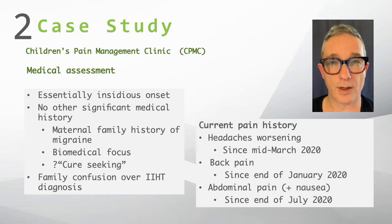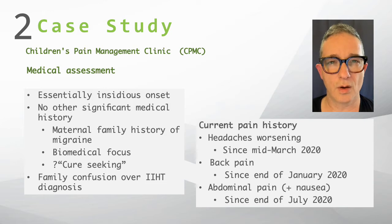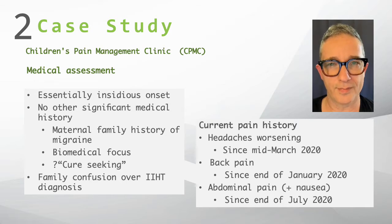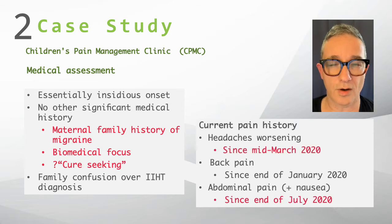The medical assessment didn't reveal much more than was already in the referral from the neurologist. They did point out a couple of things that probably explained the family model for treatment, which was essentially a cure-seeking, biomedically focused model — wanting a diagnosis and wanting medication. There was some confusion over why the neurologist changed his diagnosis, causing consternation in the family. Most notably, the exacerbation of headaches seemed to coincide with wider societal events, such as the COVID-19 restrictions and lockdowns occurring in Melbourne.